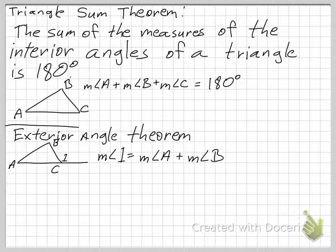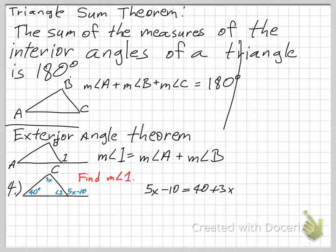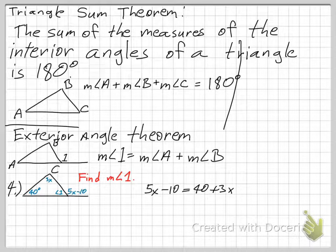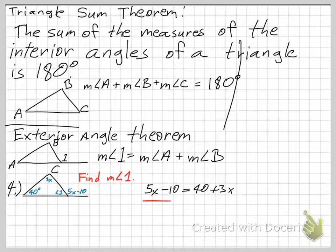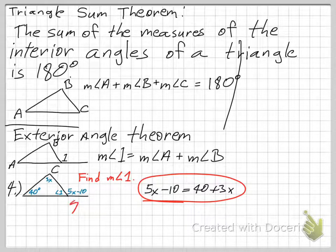Here's a problem: find the measure of angle 1. You know one remote interior angle is 3x degrees and the other is 40 degrees, and the exterior angle is 5x minus 10. Applying the Exterior Angle Theorem: 5x − 10 equals 40 plus 3x, because 5x − 10 is the exterior angle and the sum of the two remote interior angles is 3x and 40.